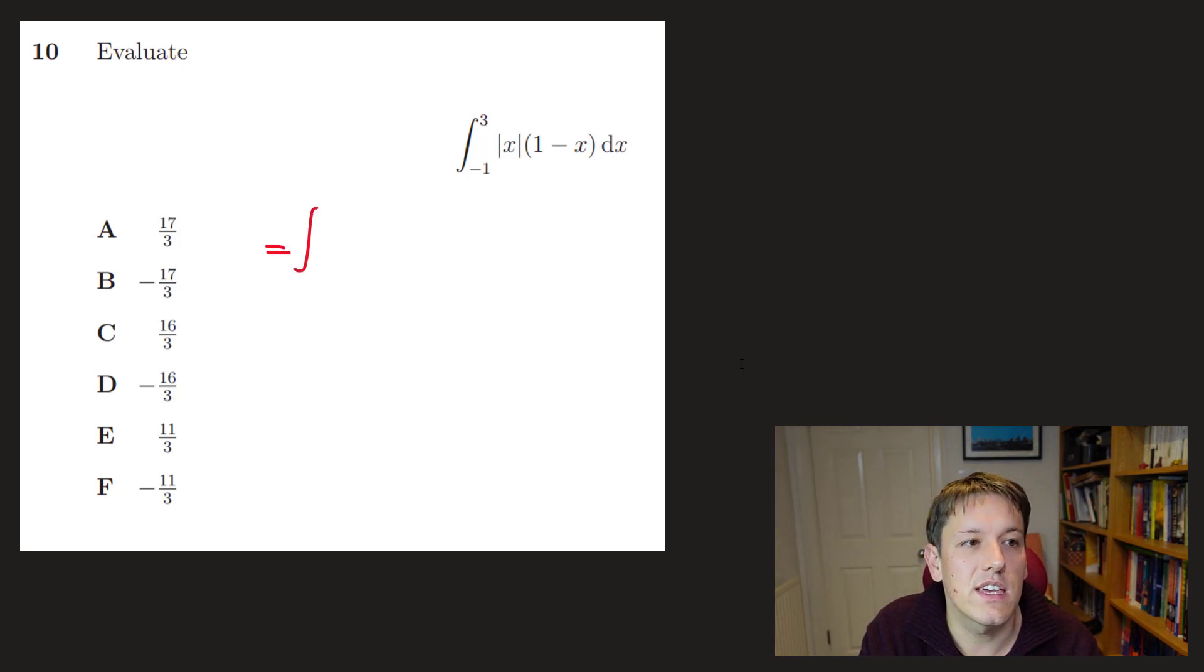So this integral here, well, when x is negative, I'm going to go between minus 1 and 0 then. And when x is negative, the modulus of x is minus x, right? So it's minus x times 1 minus x dx. And when x is positive, so between 0 and 3, the modulus of x is just x. Okay, so I get something like this. And now I've just got to evaluate these two integrals.